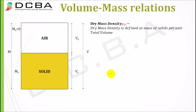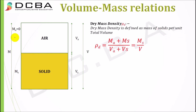Dry mass density is defined as the mass of solids per unit total volume: ρd = Ms/V. Since Ma is zero, only Ms remains in the numerator.